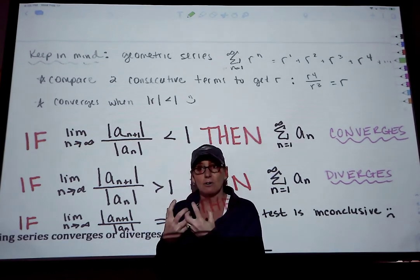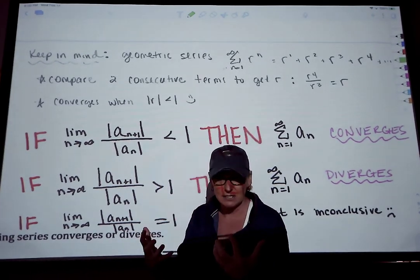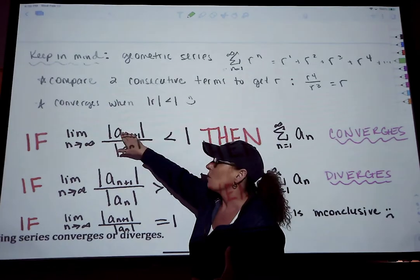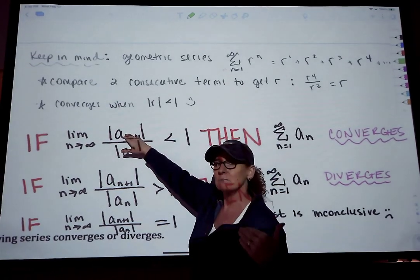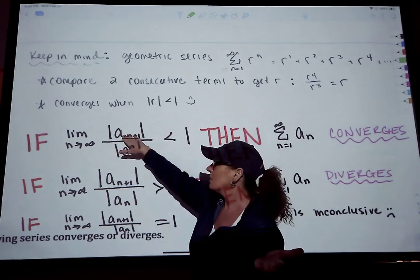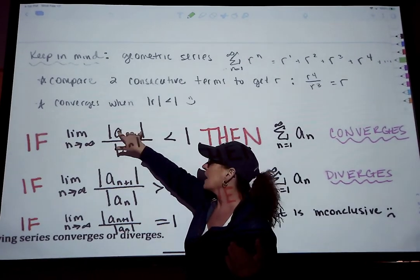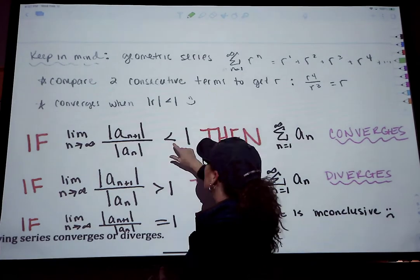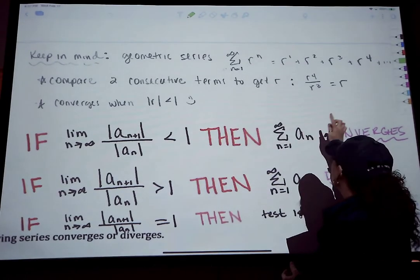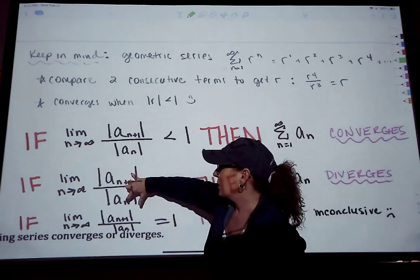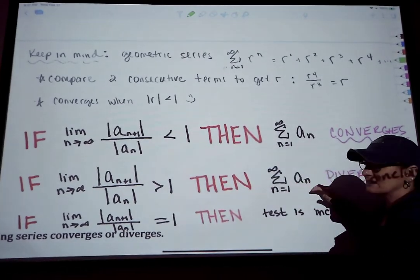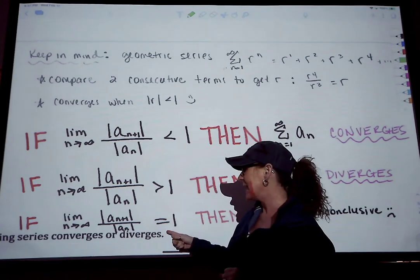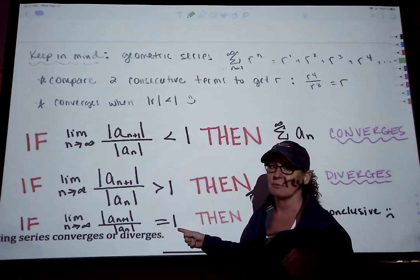That's where the ratio test comes in. Think about the math involved to find each term — call that a sub n. Then consider what the next term looks like by subbing in n plus one. We take the absolute value of a sub n plus one over a sub n and find its limit as n approaches infinity. If we get less than one, the series converges. If we get greater than one, the series definitely diverges. If we get exactly one, it's inconclusive and we have to do another test.